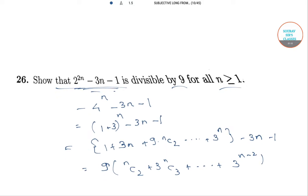This implies that 2 raised to the power 2n minus 3n minus 1 is divisible by 9 for all n greater than or equal to 1.